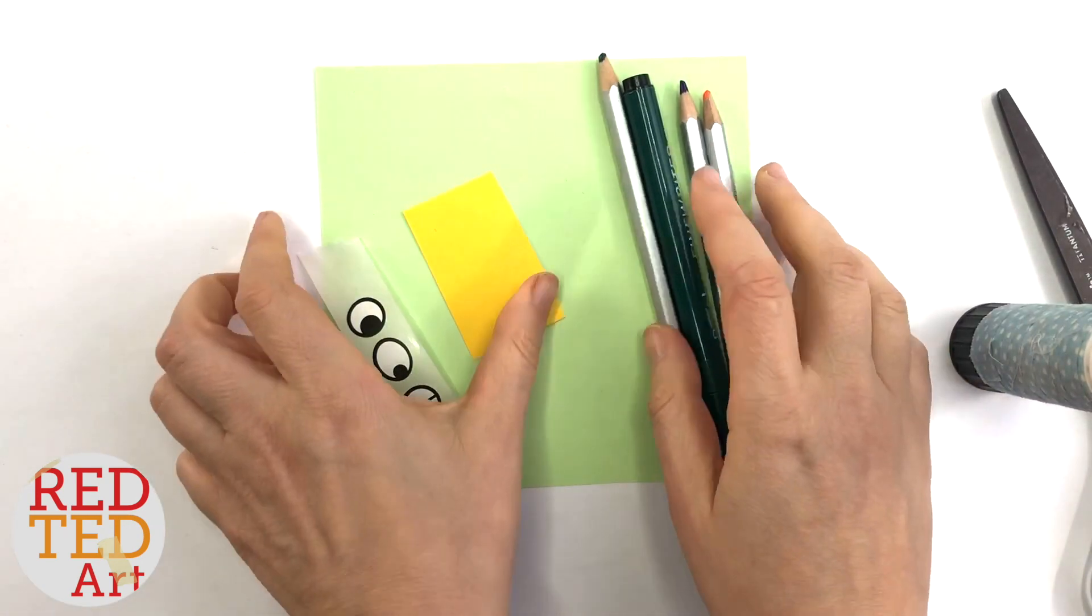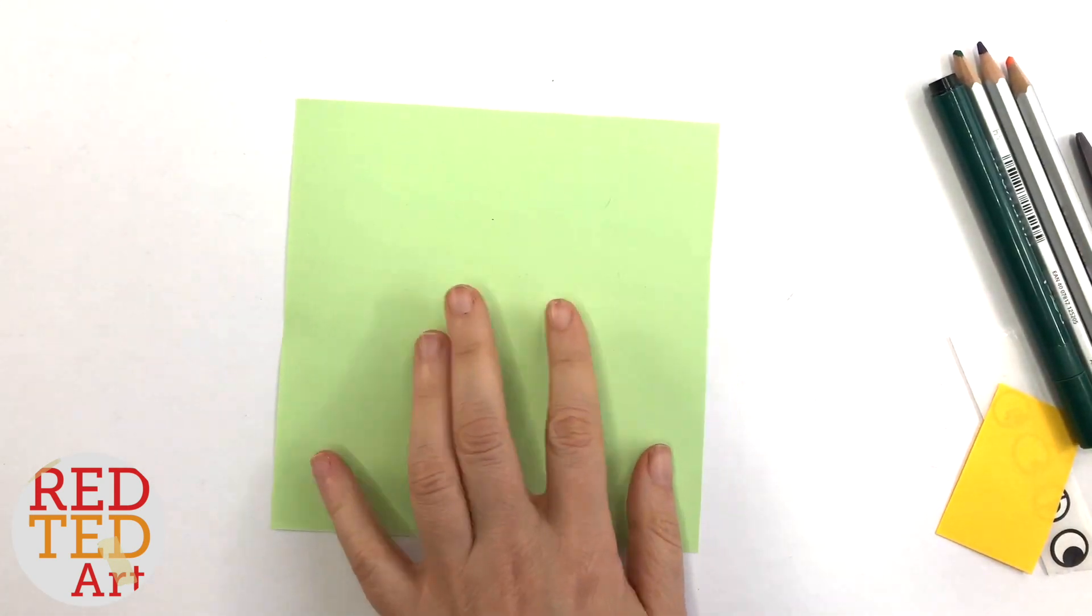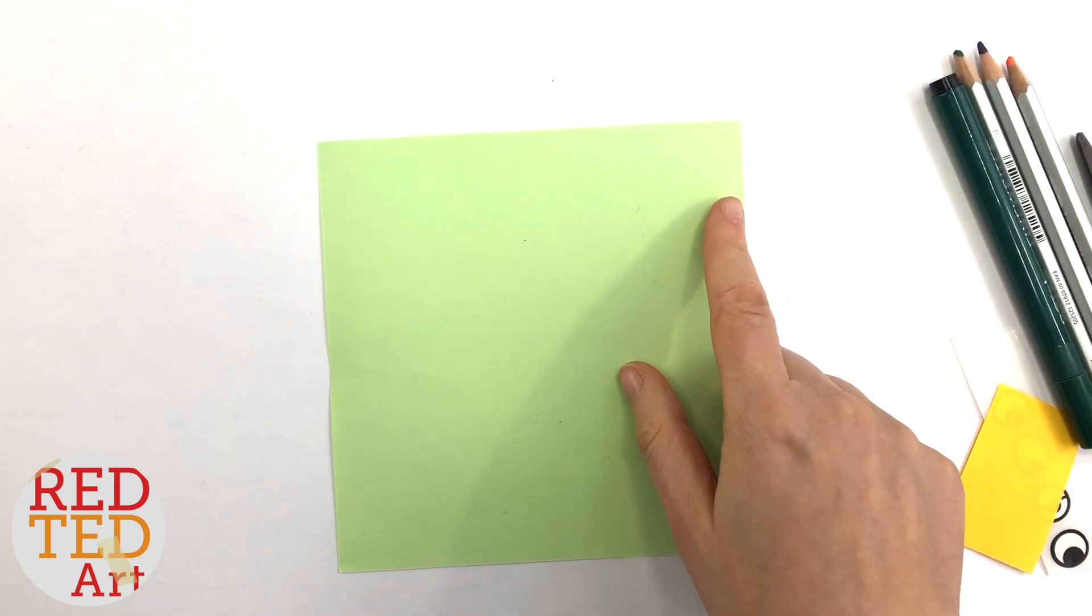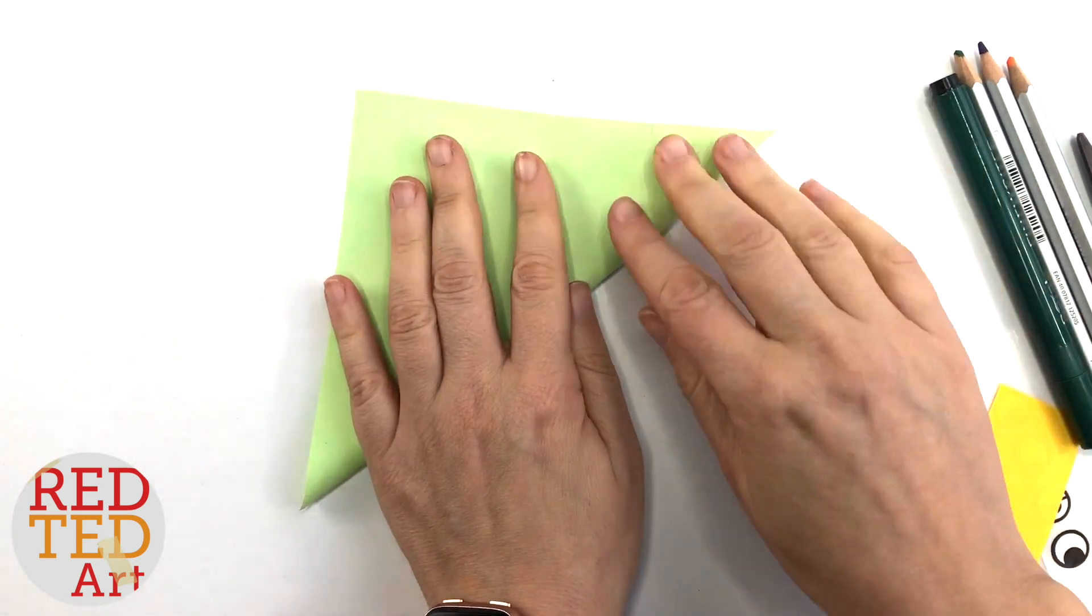So we take our square—it's roughly 14 by 14 centimeters—and you bring up one corner. Now it looks like mine isn't perfectly square, so I might have to trim it. I cut it myself; it's not ideal.